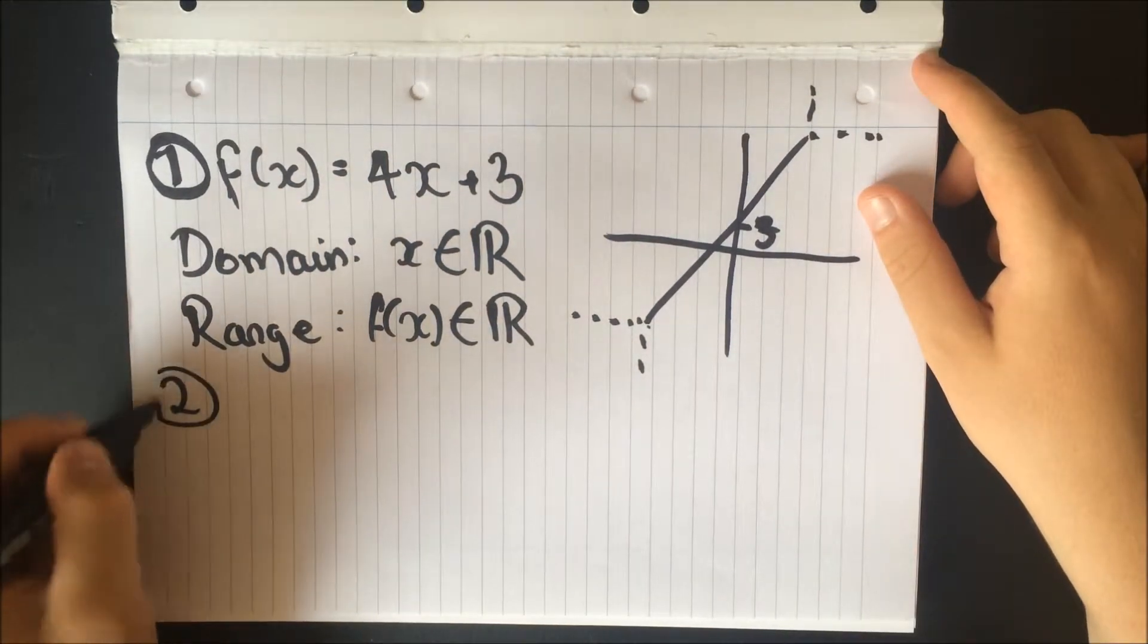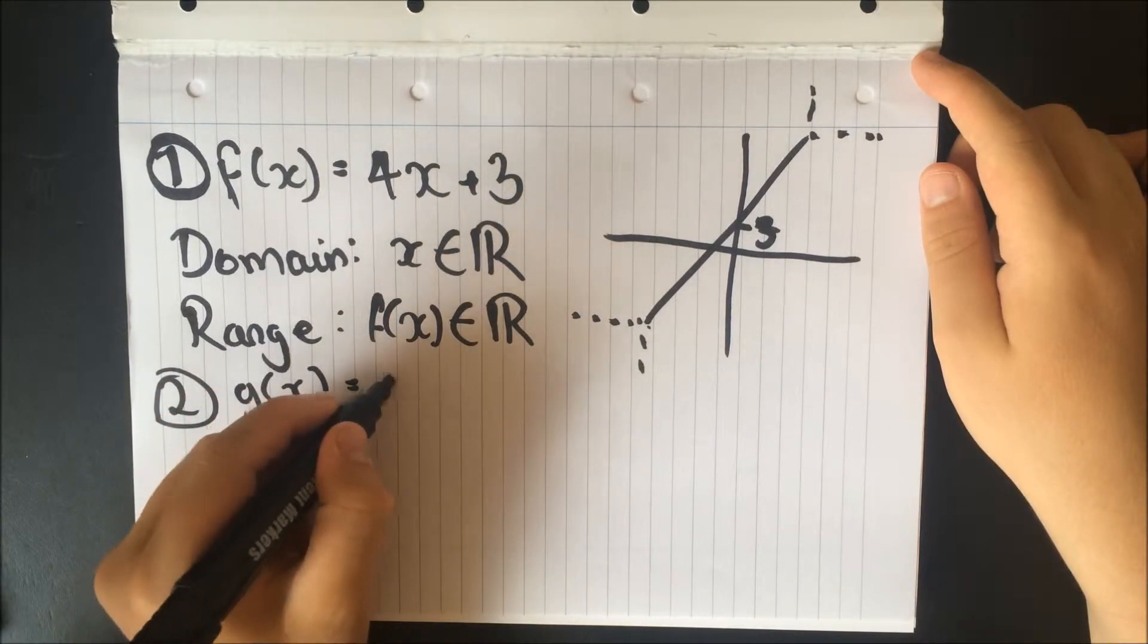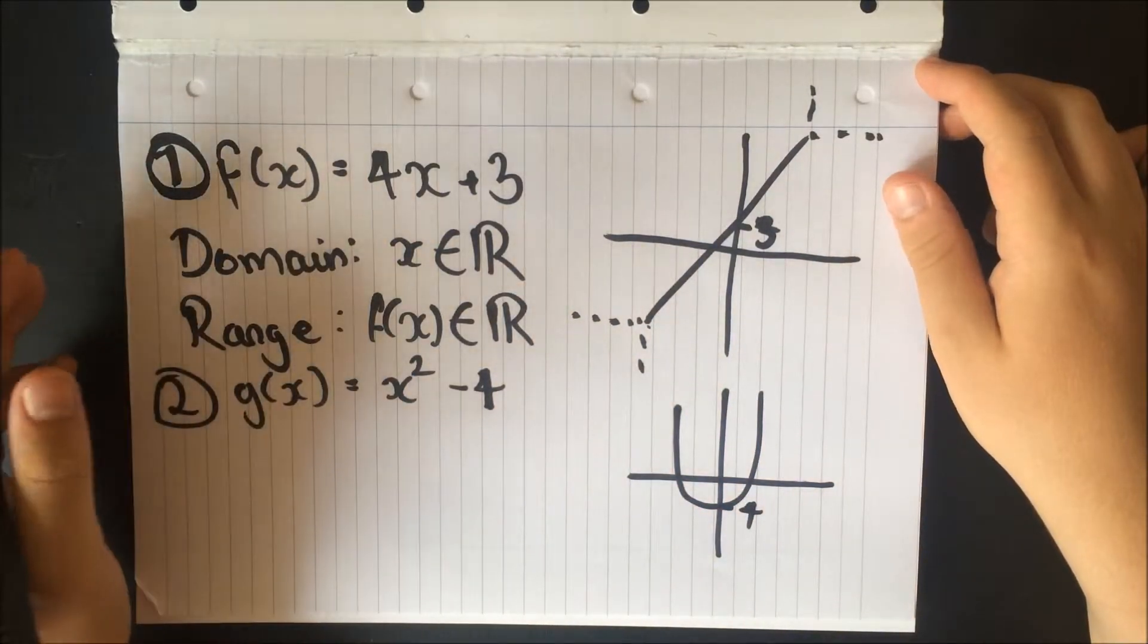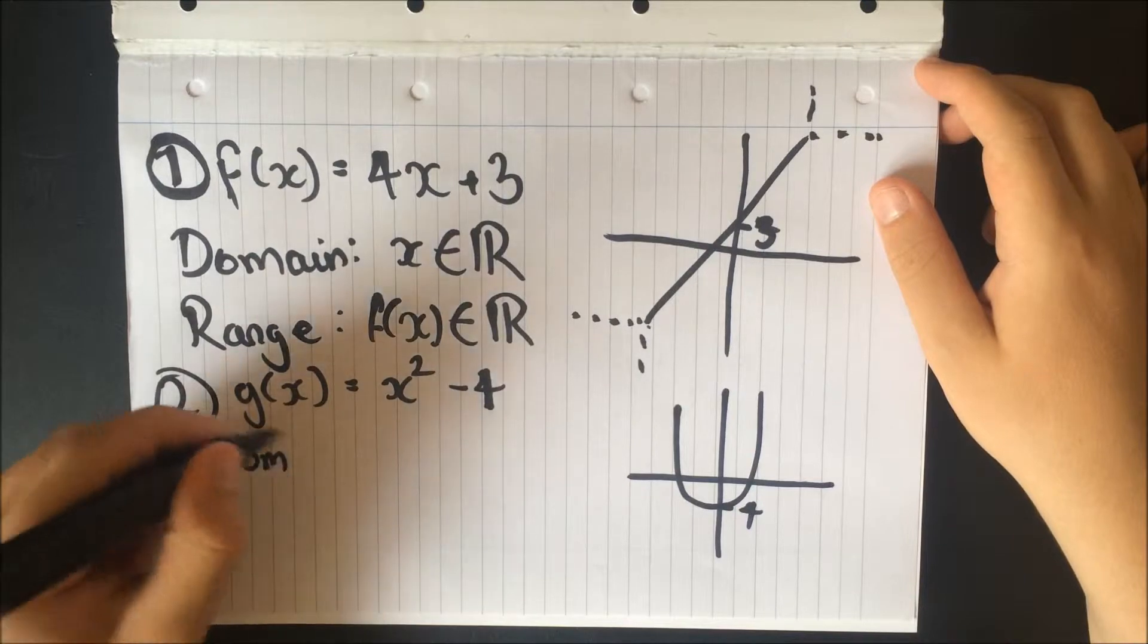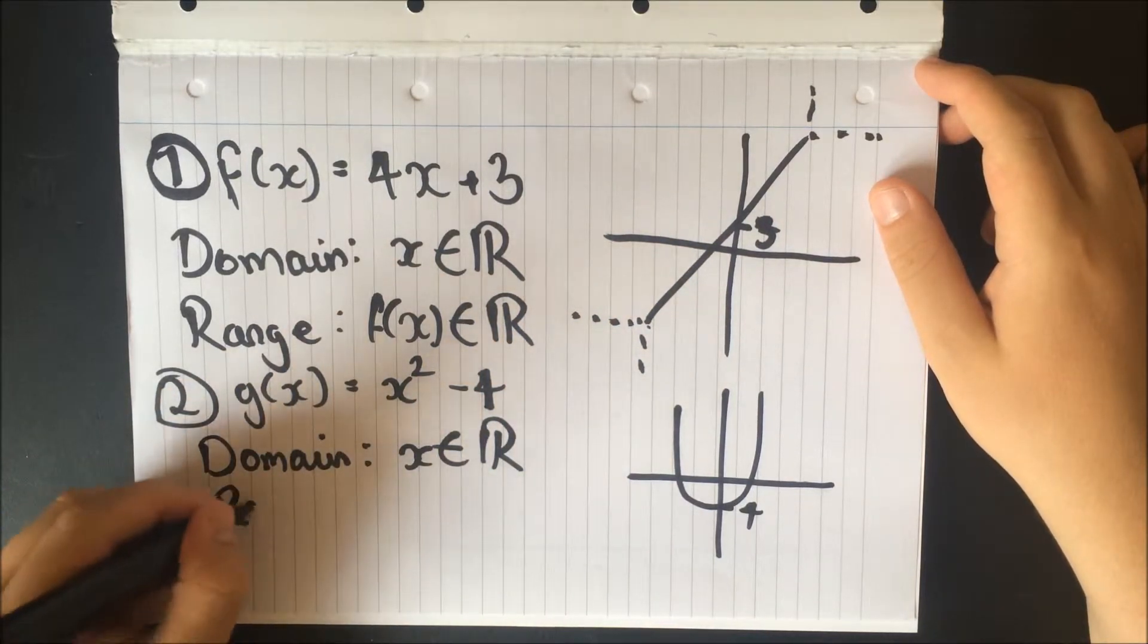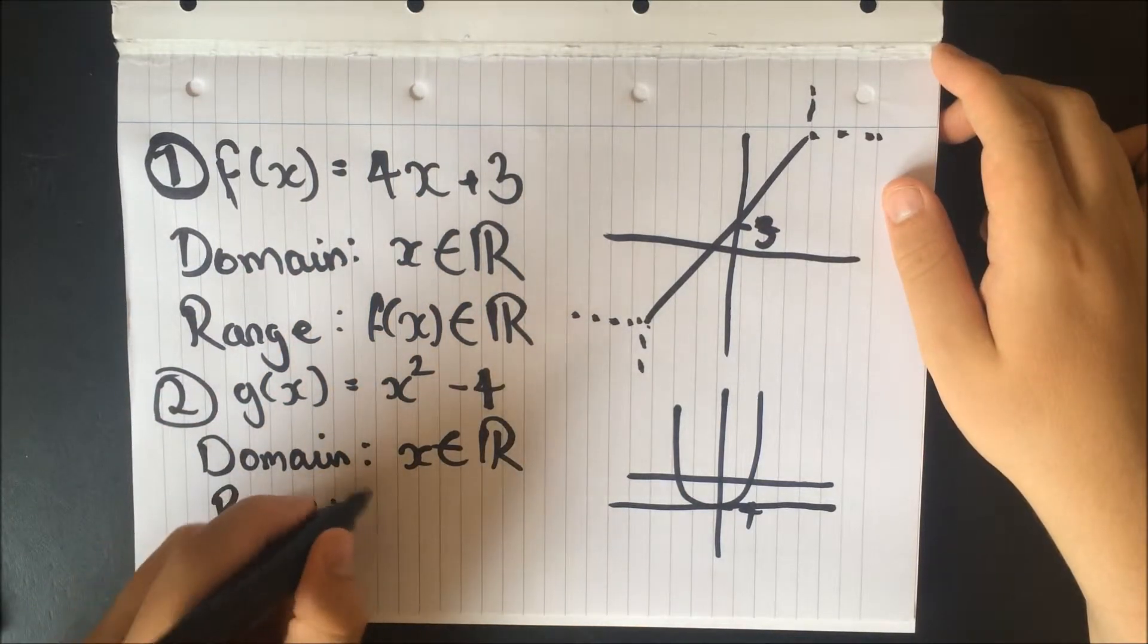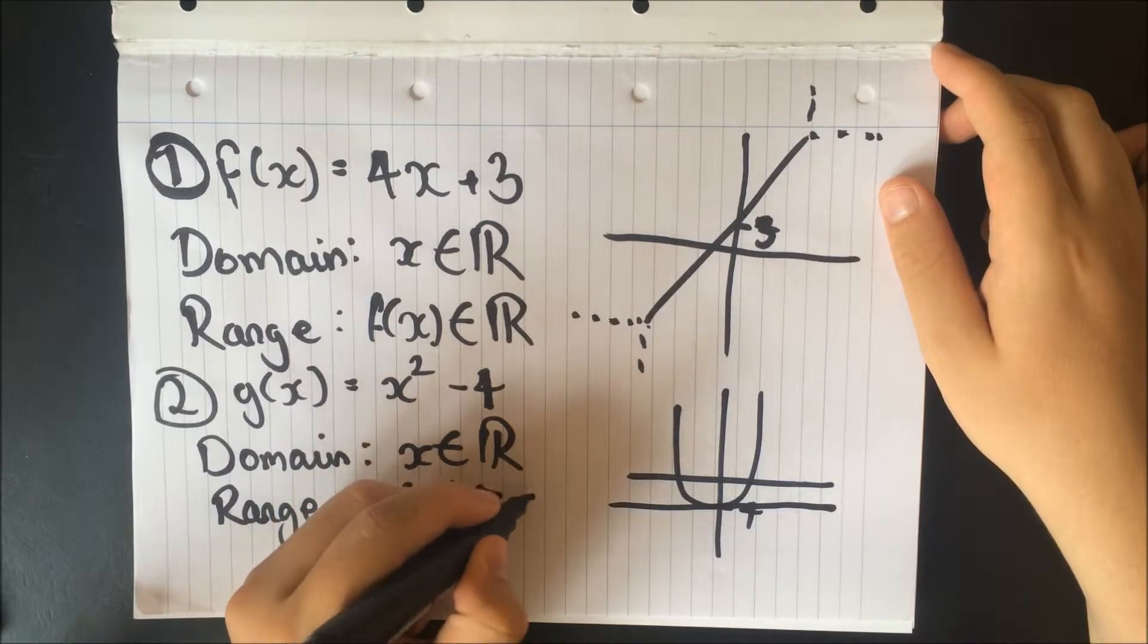So what if I had question 2, where g(x) is equal to x squared minus 4? Well, it's just like what we had before. With the domain, it can take any real value. So x is a subset of the real numbers. However, the range, we can see there is no values below the line y equals minus 4. So therefore, y cannot take anything below 4. So the g(x) is anything more than or equal to minus 4.